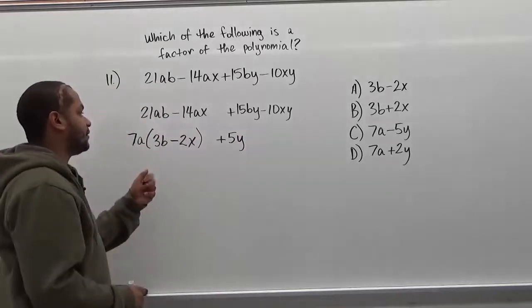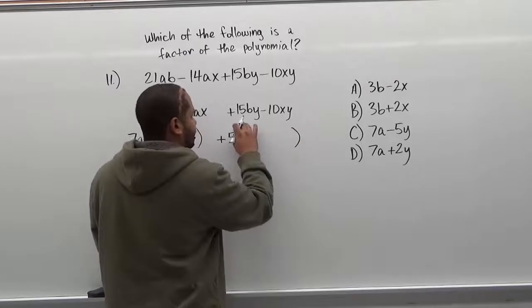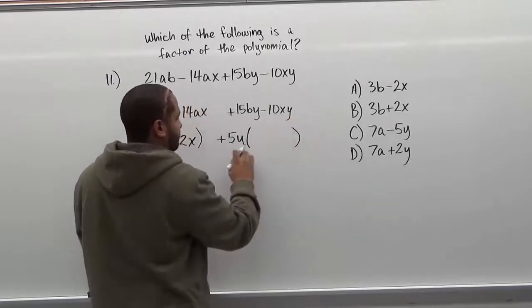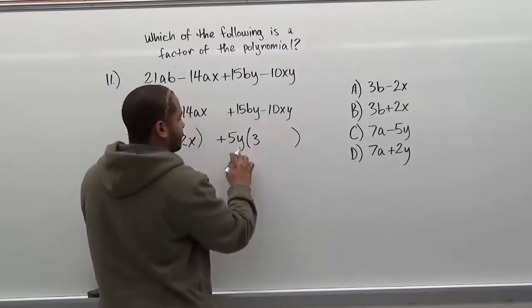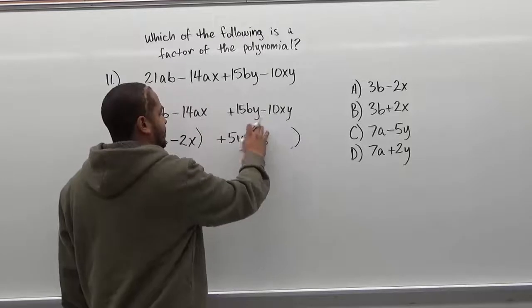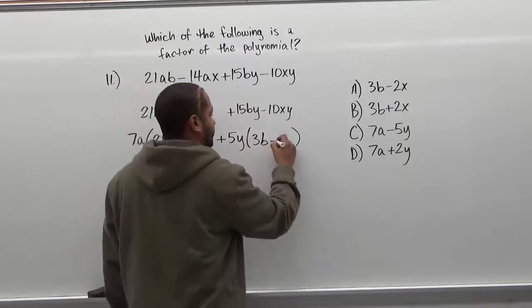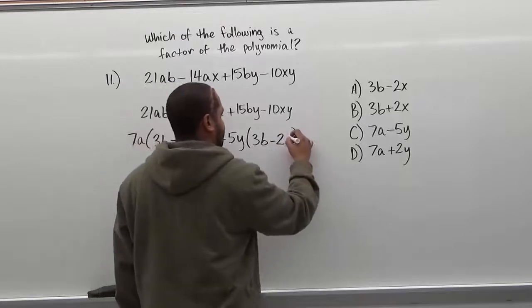Now what's going to be left over is the division of 15by take away 10xy by 5y's. So 15 divided by 5 is 3, and by divided by y is simply b. Now negative 10 divided by positive 5 is negative 2, and xy divided by y is just x.